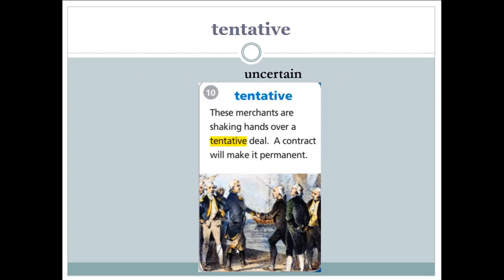The last word: tentative. Tentative means uncertain — when something is tentative, it is not guaranteed. Let's read the example: these merchants are shaking hands over a tentative deal. A contract will make it permanent. The deal is uncertain; we're not sure if it's going to take place, but a written agreement will make it permanent and applicable.